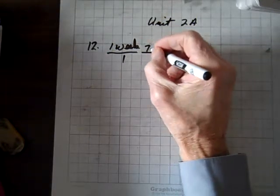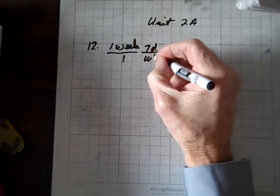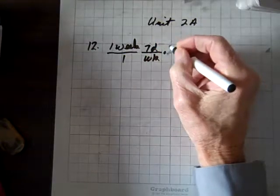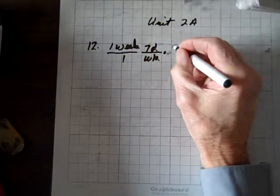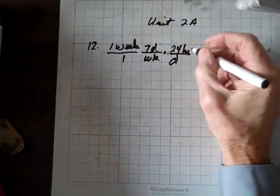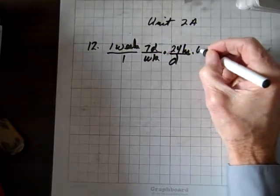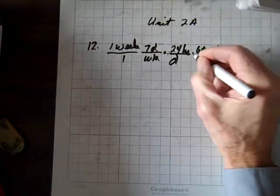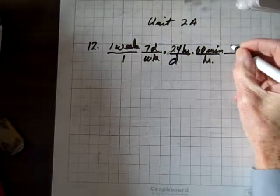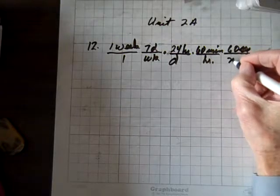How many days in a week? There's 7 days, I'll just put D, in a week, WK. How many hours in a day? There's 24 hours in a day, D. How many minutes in an hour? That's 60 minutes in an hour. Now we'll go to seconds, and there's 60 seconds in a minute.